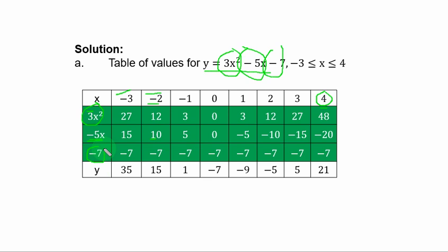To get y, you simply add. 27 plus 15 is 42. Minus 7, you have 35. If you add this, you get this result. If you add this, you get this result. And so on.